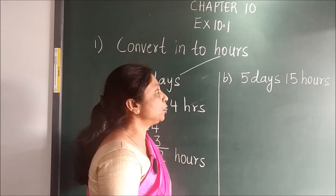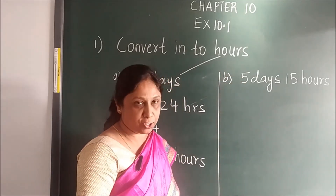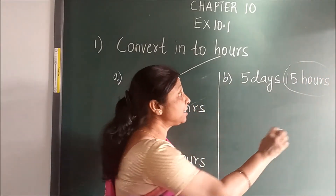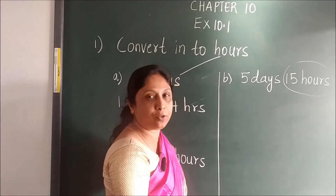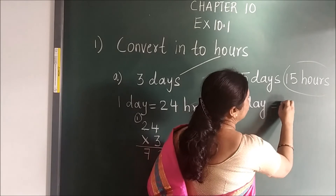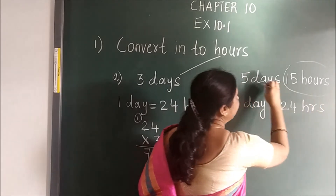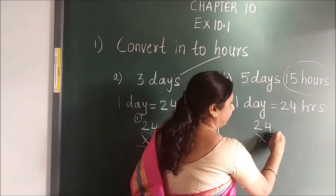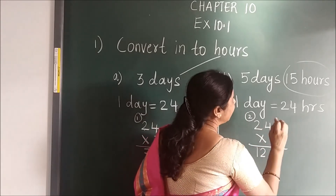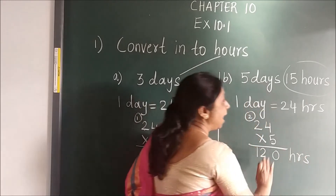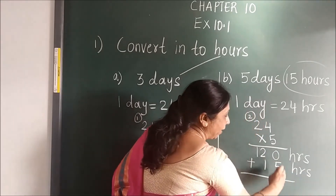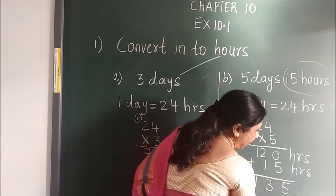In the B sum also, you have to convert into hours. But here you can see one thing — this is already in hours, so this will remain the same. No conversion will take place. Now here we will convert. Again we write the relation: 1 day is equal to 24 hours. Then 24 multiplied by 5. When you multiply: 5 fours are 20, 5 twos are 10, carry 1 — gives 120 hours. And the remaining 15 hours you will add here. When you add, you will get the answer: 135 hours.